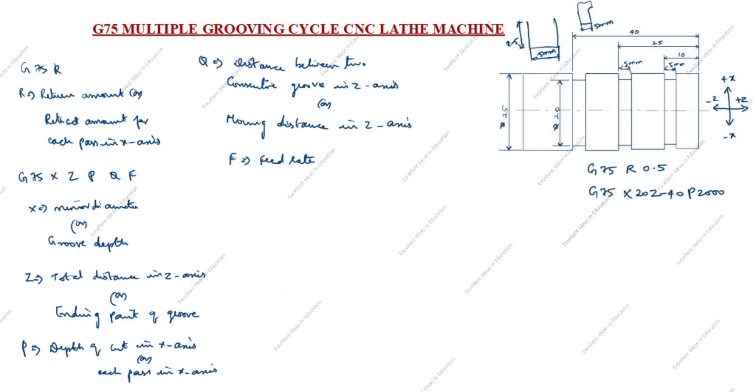First what happens? 2000 right, so the P comes 2000 down, up to here. It goes up for 0.5, retract value is 0.5. After that it comes down till the groove depth.